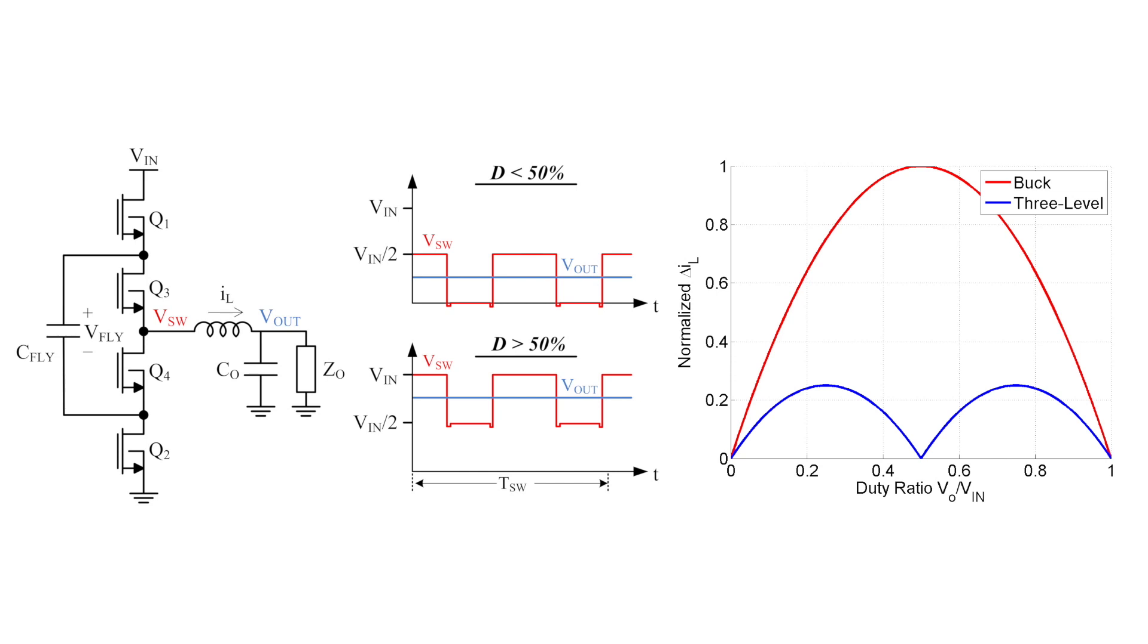Current ripple is used to select an inductance value, so reducing it enables the use of smaller, low-profile inductors. Additionally, the coil resistance is a function of inductance, so reducing it will also reduce the power losses.